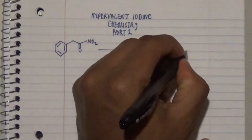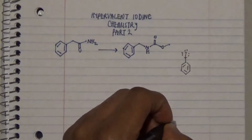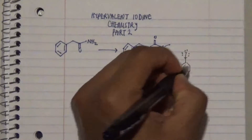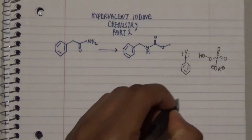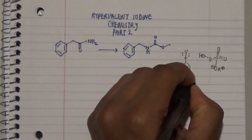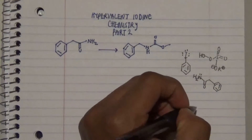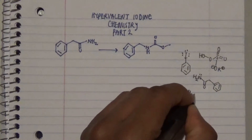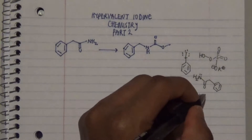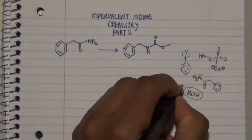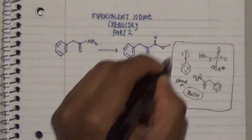One reagent you can use is iodine attached to a benzene group. On the other side we need another particular reagent as well, and another reagent you can also include in this process is shown here. Lastly, we need a solvent — methanol — because methanol is quite cheap and less expensive overall. These are the reagents that will be used in the reaction.